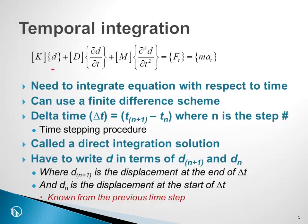In this equation we have time, the change of displacement with respect to time, and the rate of change of displacement with respect to time, which is the acceleration. On the right-hand side, we have mass times acceleration, but the acceleration changes with time. So we need to integrate this equation with respect to time. To do this, we use a finite difference scheme, defining a time step — a time increment delta t — where delta t is the time at the end of the time step minus the time at the start of the time step.